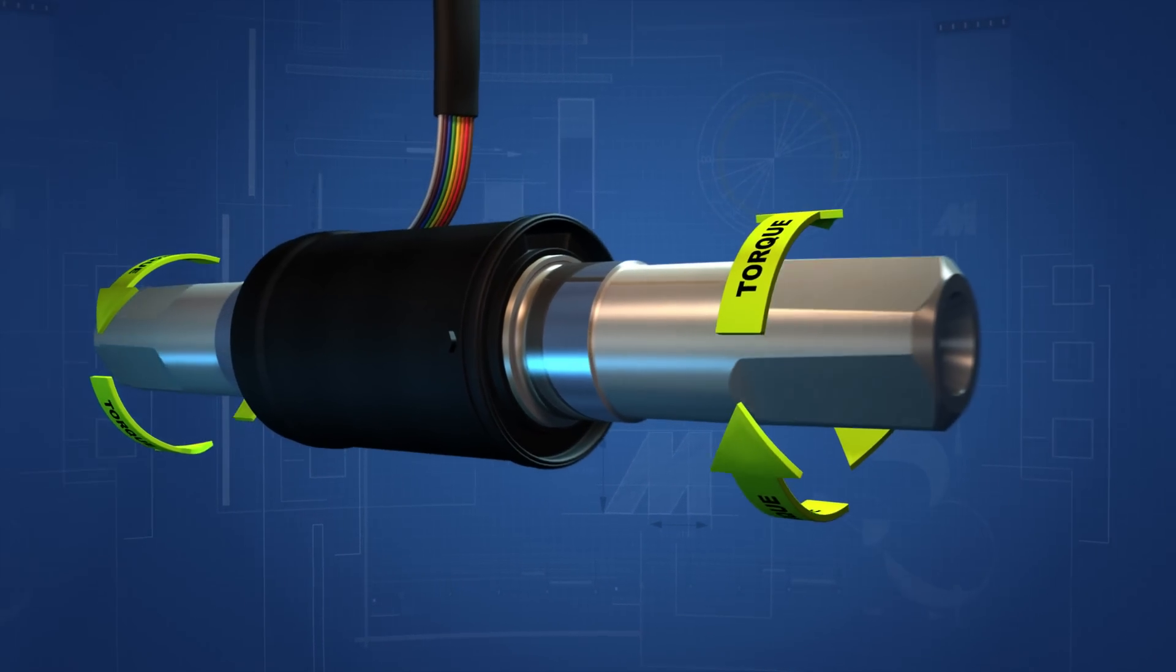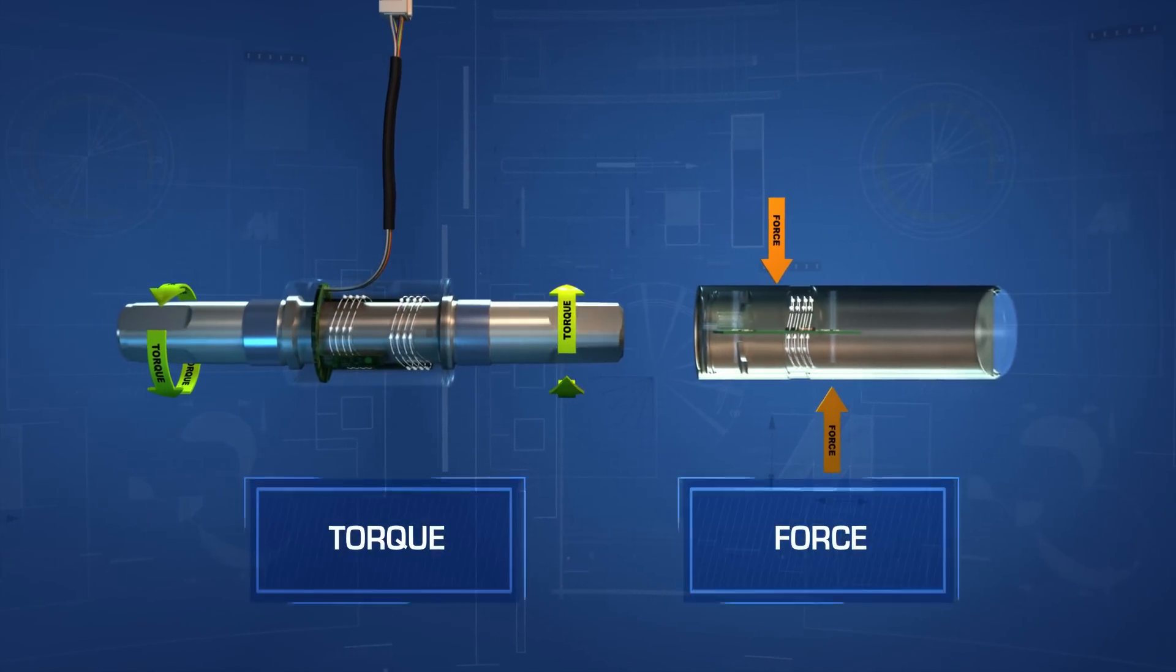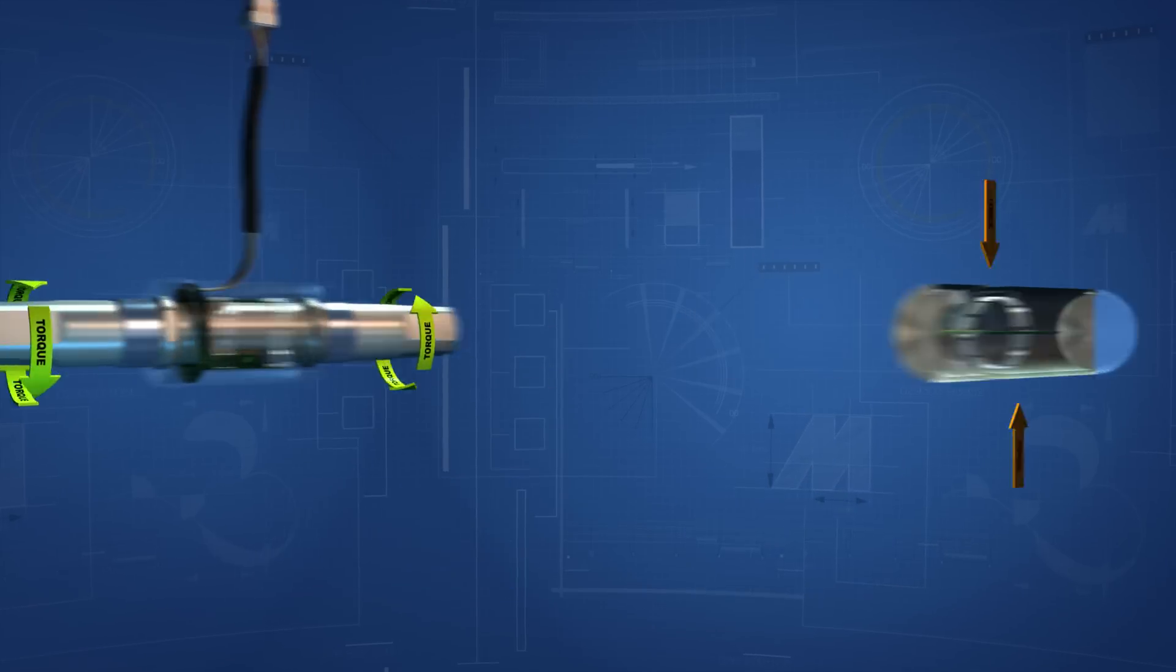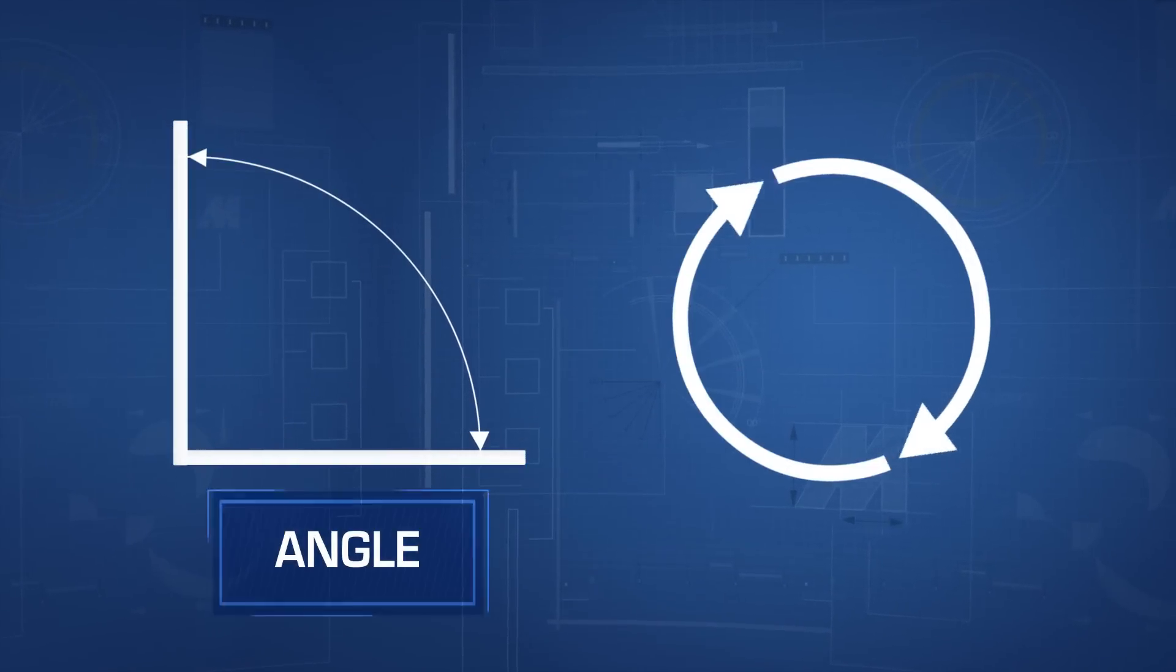As a result, magneto-elastic sensors are capable of sensing and recording not only the levels of torque and force, but in addition, direction and position, angle and speed.